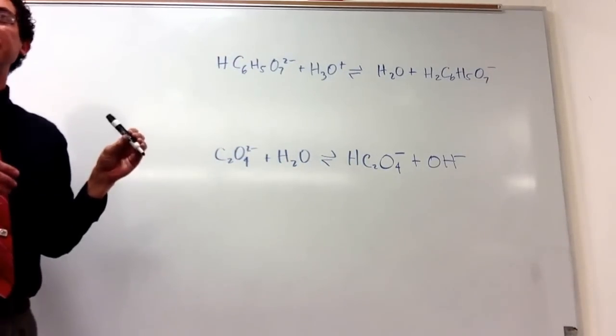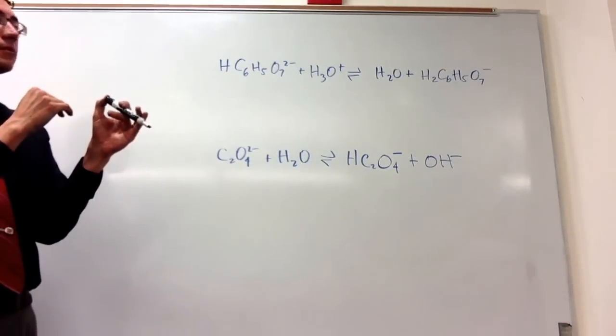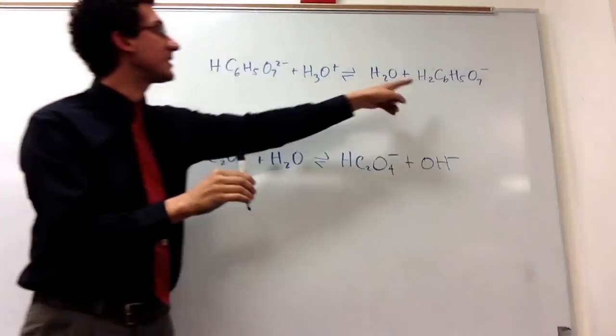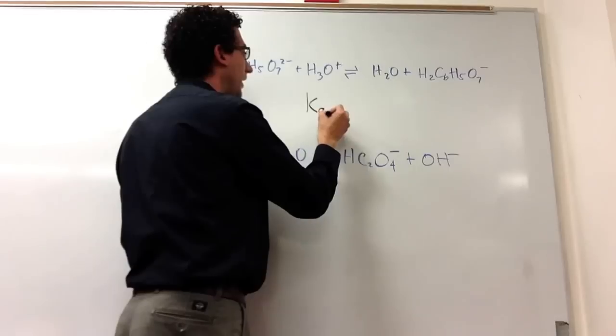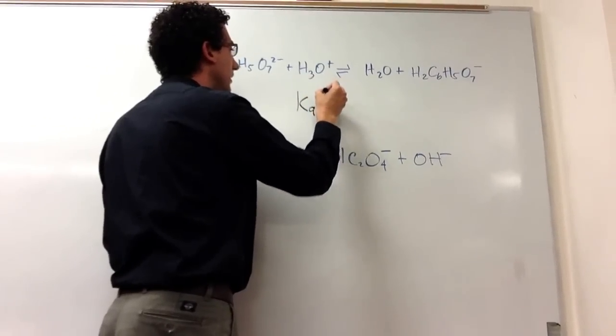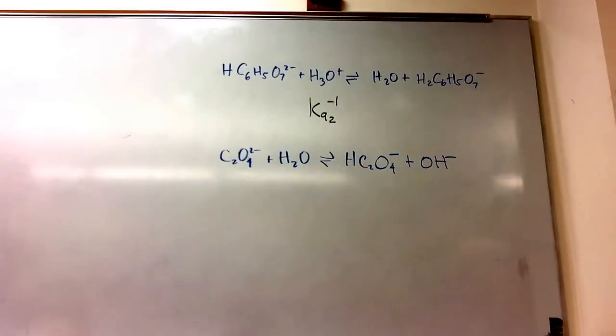So what K is this? Going backwards, KA1. It's losing the second proton. So the reverse reaction is KA2 and then it's to the negative one because it's going backwards. Is that kind of okay? So you know it's a KA2 because H2C6H5O7 is already a minus, so you know it's lost a hydrogen already. Exactly. And then it's the reverse of it losing its second. Yes.